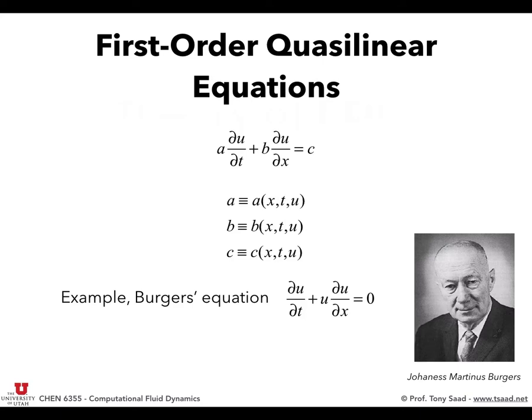It's Burgers' apostrophe — Johannes Martinus Burgers. He came after the original equation was developed by Bateman in 1915. I've seen many people write 'Burger's' with an apostrophe-s, and it just angers me. This is a person's name — give the person enough respect to write their name correctly. Same for Navier-Stokes, Prandtl, and others.